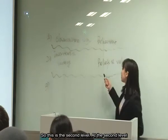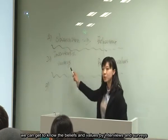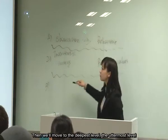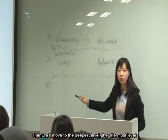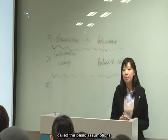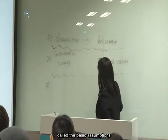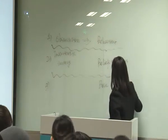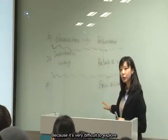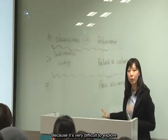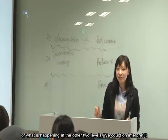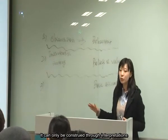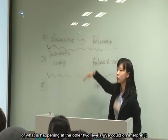At the second level, by interviews and surveys we could get to know the beliefs and values of a culture. Then we move to the deepest level, the uttermost level, called basic assumptions. This level is the deepest yet the most interesting one, because it's very difficult to explore and can only be construed through interpretation of what is happening at the other two levels.